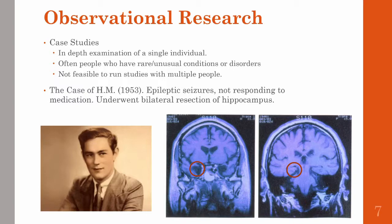A famous example of a case study is the case of HM. HM had severe epileptic seizures and didn't respond to typical medications. As a last-ditch effort, neurosurgeons went in and resected bilaterally parts of the medial temporal lobe, which includes what's known as the hippocampus — now known to be critical for consolidating new information into long-term memory.